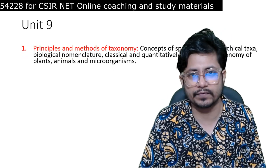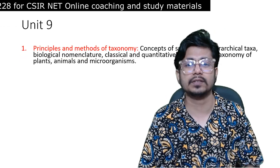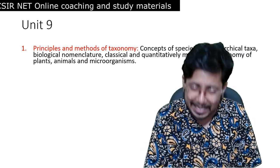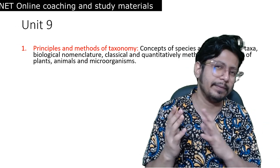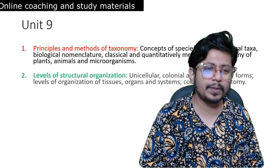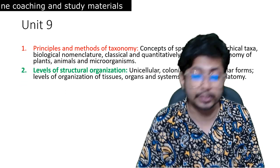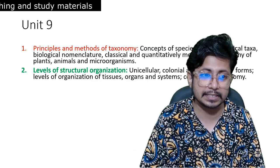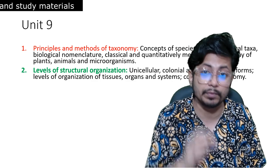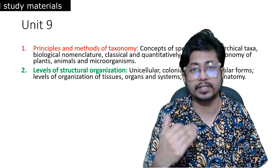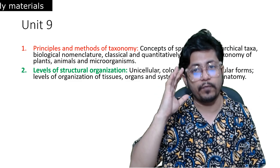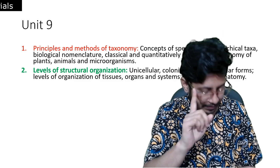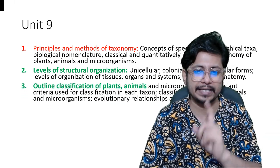Starting with principles and methods of taxonomy — red, least important. Concepts of species and hierarchical taxa, the components of a taxonomic diagram and their basics. Next, levels of structural organization — very, very important. Unicellular organisms, colonial or multicellular forms, levels of organization — this is most important. Classification for invertebrates till phylum level and vertebrates till class level is very important. Outline classification of plants and animals is equally covered here.